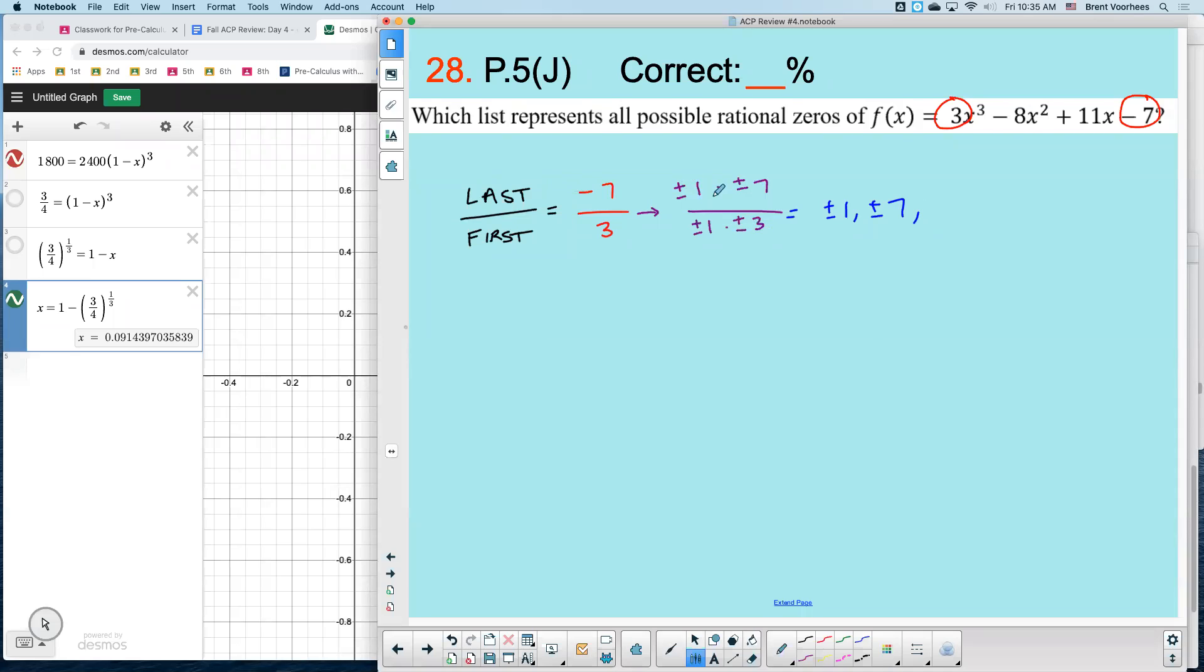And then I'll also have plus or minus ones divided by plus or minus threes, one-thirds. And then I'll have the same with seven-thirds, plus and negatives. That's my list right there.